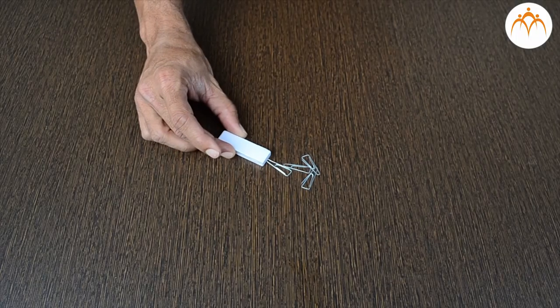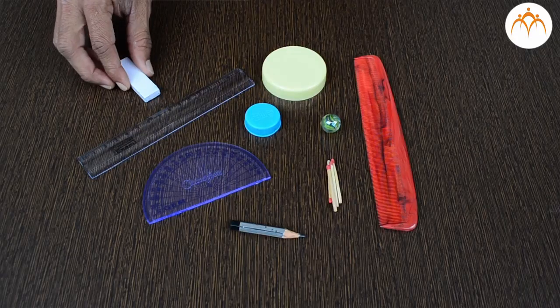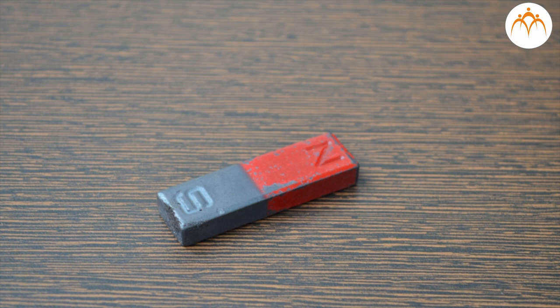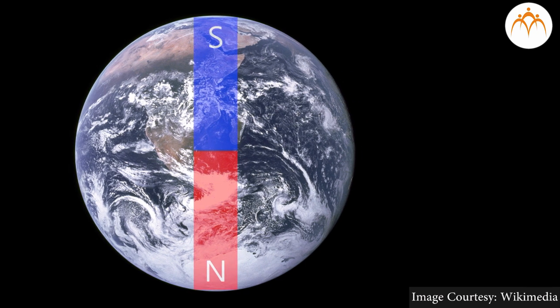We know that magnets are all around us. Some objects are attracted by a magnet while others are not. All magnets have two poles, north pole and south pole. Our planet Earth itself is a giant magnet. Find out more information about magnet on the internet.